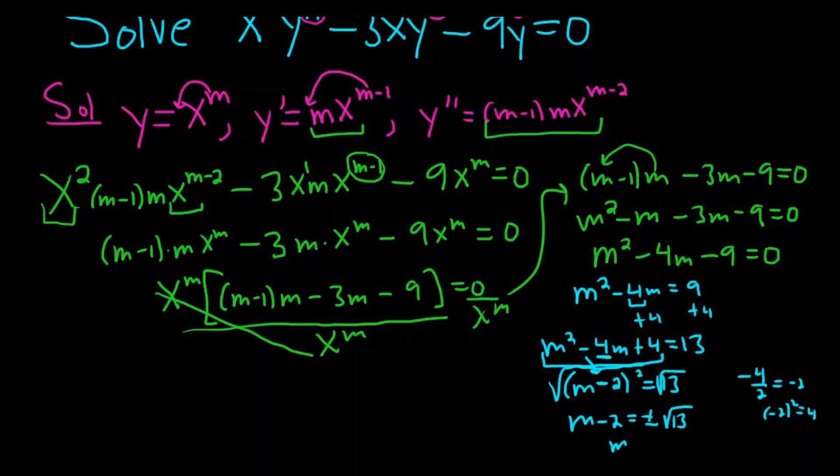To finish, you just add 2. So you get 2 plus or minus square root of 13. So we have distinct real roots.